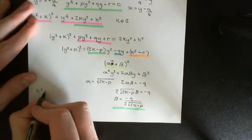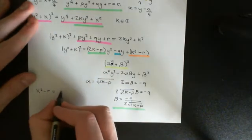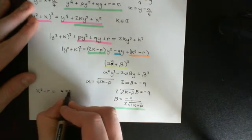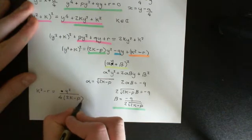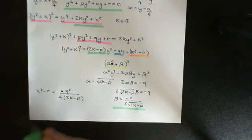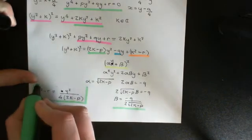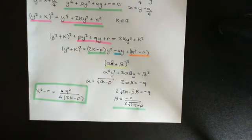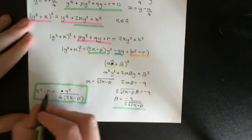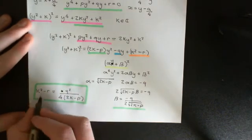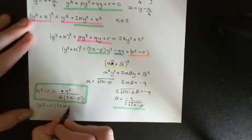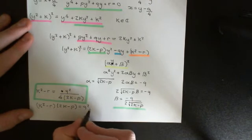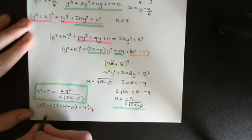We now need k squared minus r to equal beta squared. If we square beta, we get q squared over 4 times 2k minus p. So there is now the restriction that has to hold true in order for this to work at all. We need k to obey this equation. Multiplying through by 2k minus p, we get: k squared minus r times 2k minus p needs to equal q squared over 4.